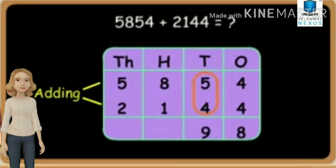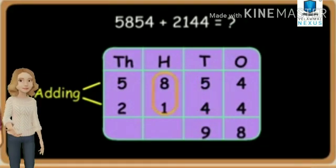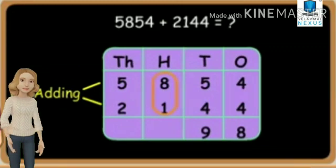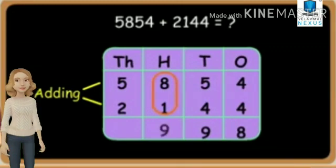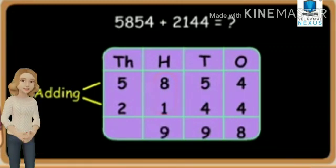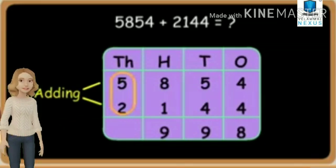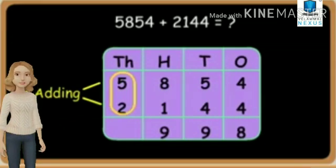Now moving on to the hundreds place we have 8 and 1. So we need to add 8 and 1. So 8 plus 1 gives you 9. Now finally moving on to the thousands place we have 5 and 2. So 5 plus 2 gives you 7.